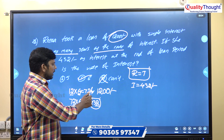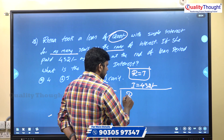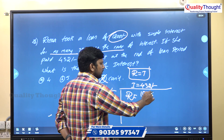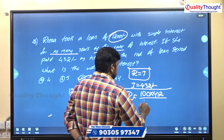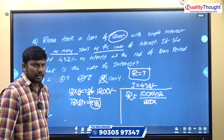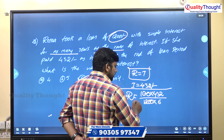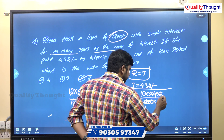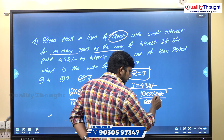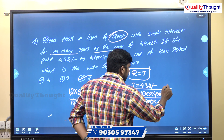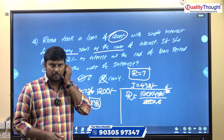Verifying with formula: Rate of Interest = 100 × Simple Interest ÷ (P × T). That is 100 × 432 divided by 1,200 into T, where T equals the rate. After cancellation, this gives 6. So rate of interest is 6 and time period is 6.